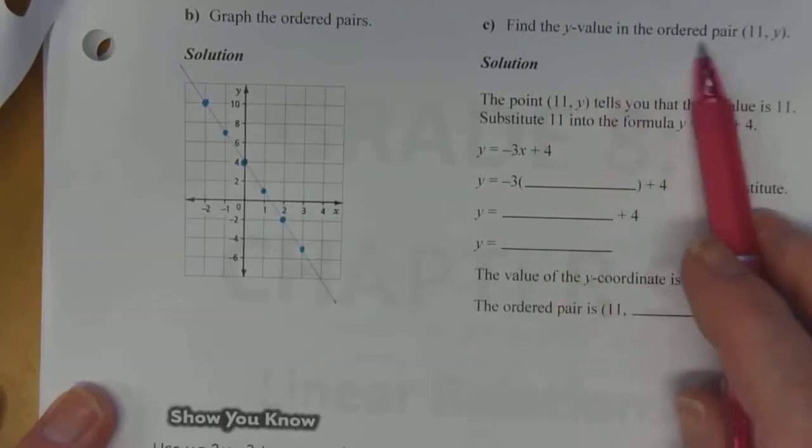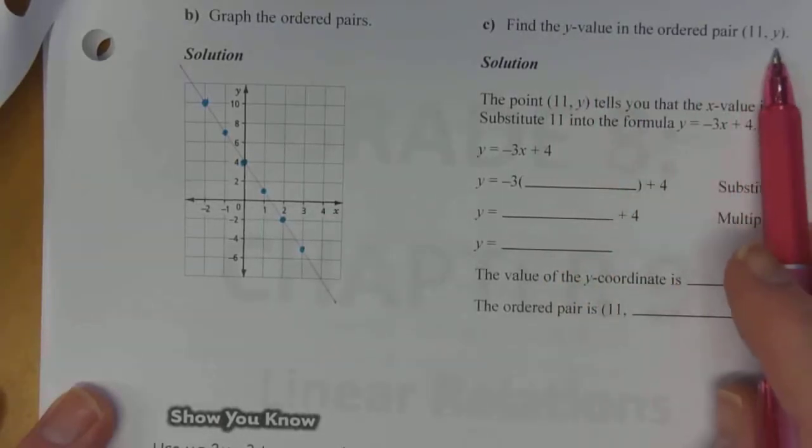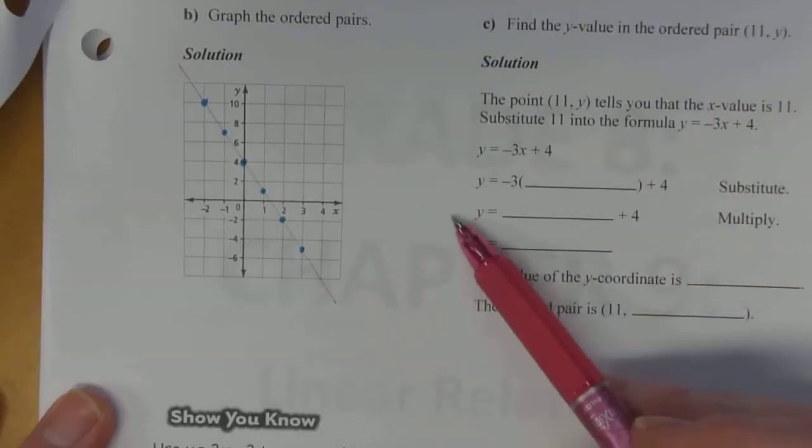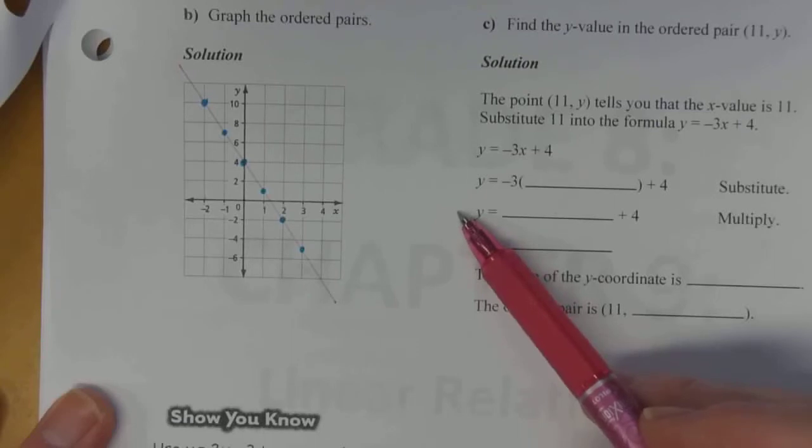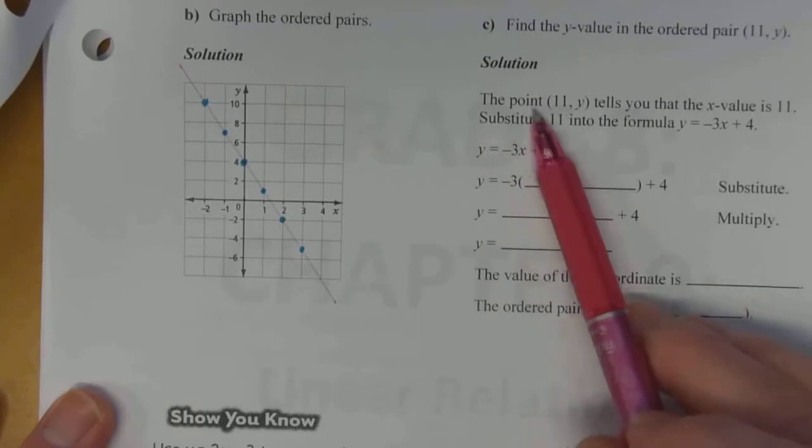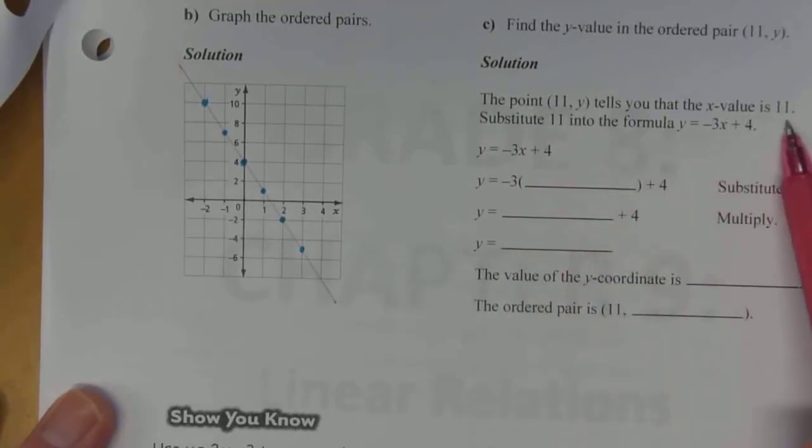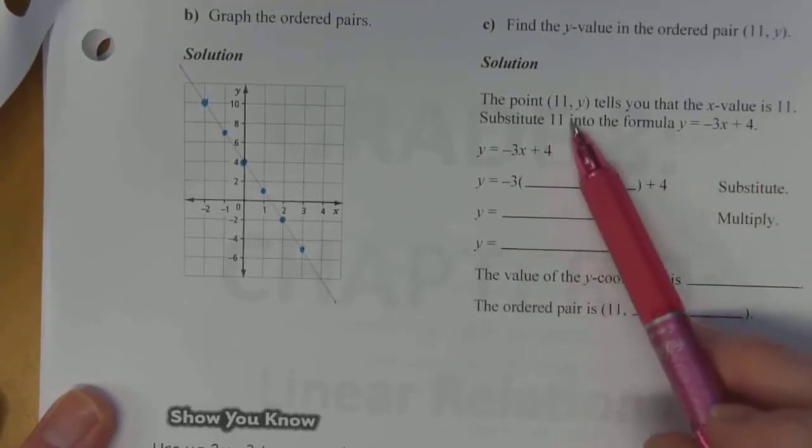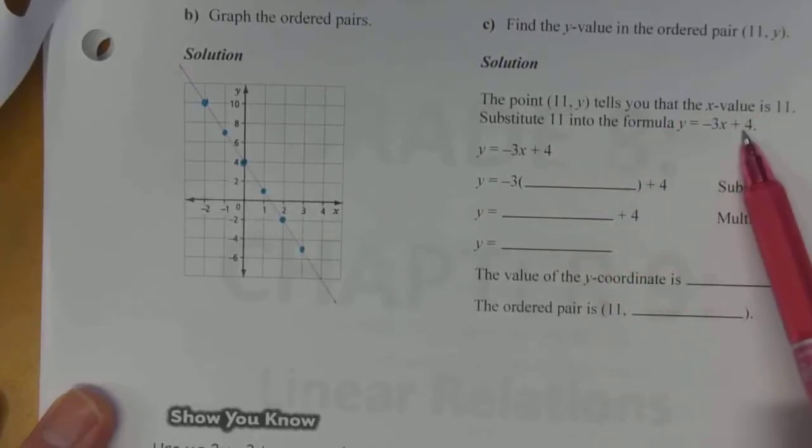Find the y value in the ordered pair, 11 comma y. So x is equal to 11. Well, that's going to be way off the graph. So it's going to be way down here somewhere. The point 11, y tells you that the x value is 11.